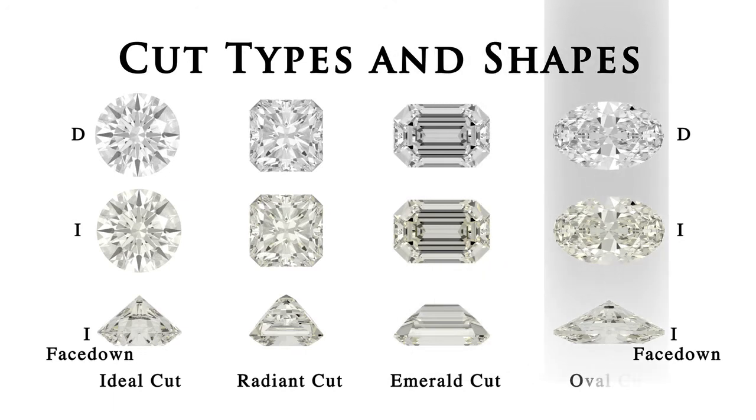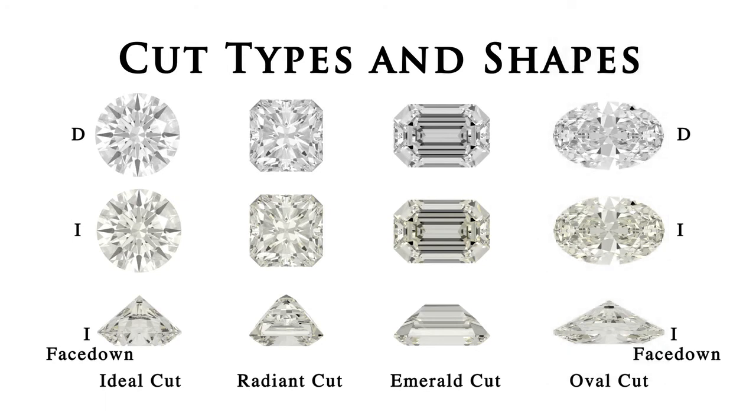The distribution of colour in an oval, pear shape, or marquise cut is usually quite uneven.